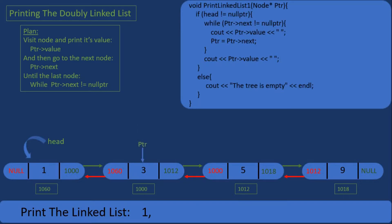Now we're pointing to the second node, and since its next pointer is pointing to another node we enter the while loop and print out its value which is 3, then advance ptr to point to the next node. The third node's next pointer is also pointing to another node so we're still in the while loop and print out its value which is 5. We then advance ptr to the fourth node, but this is the last node since its next pointer is pointing to null, so we exit the while loop.